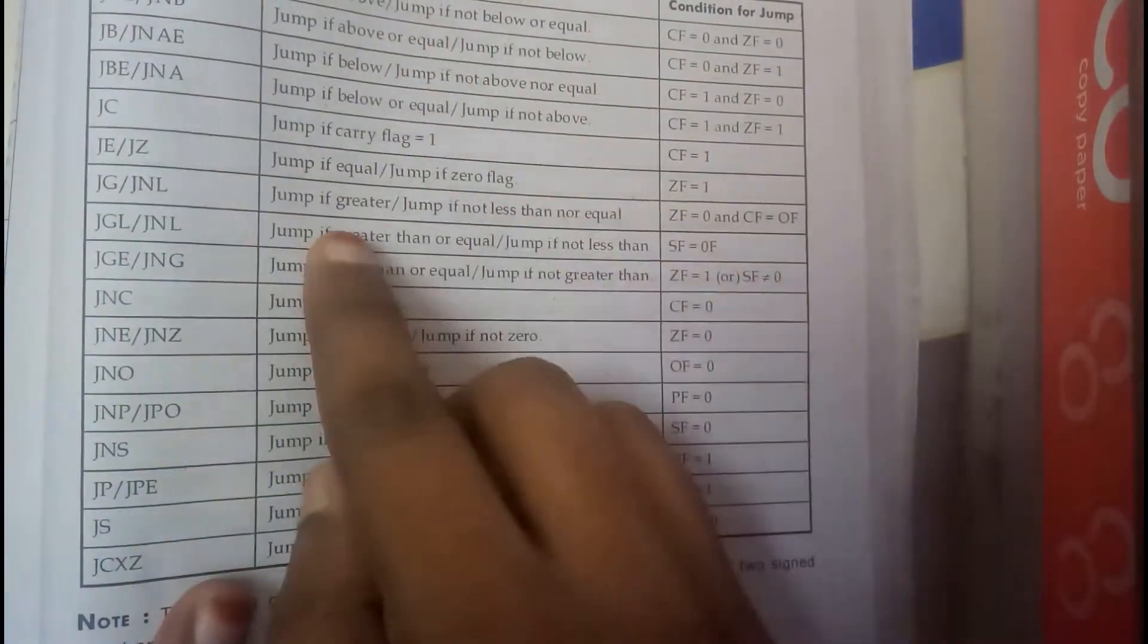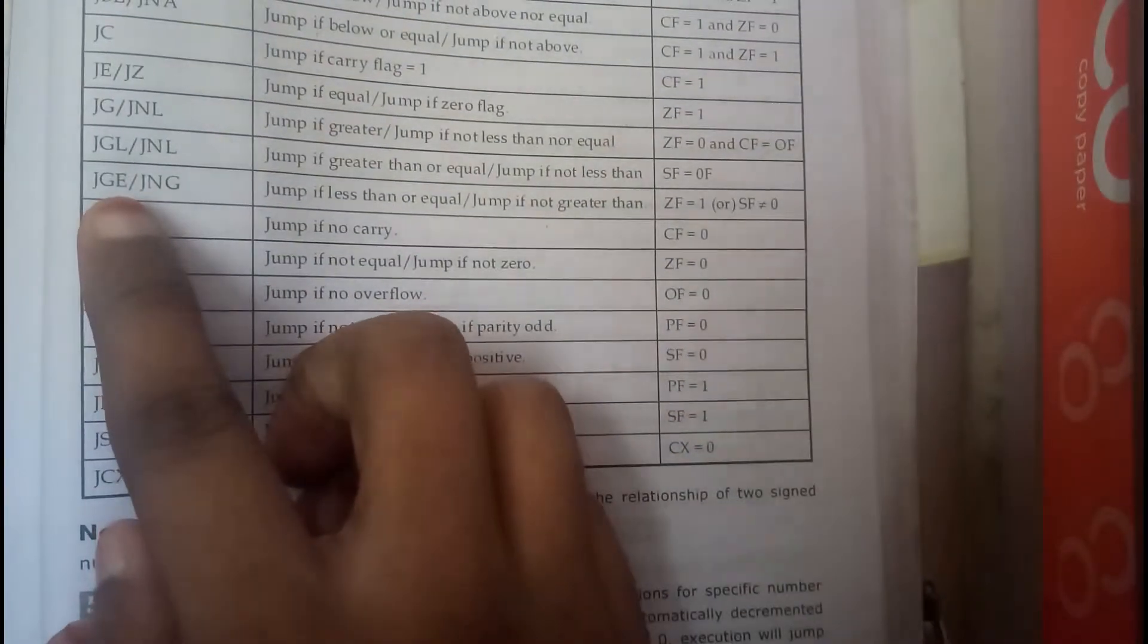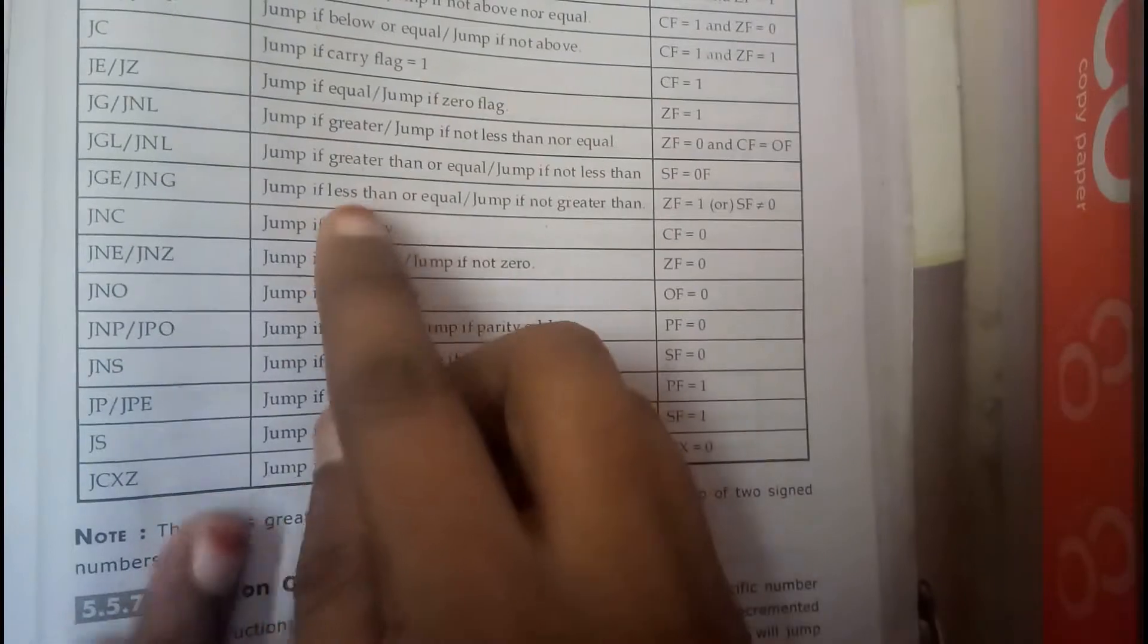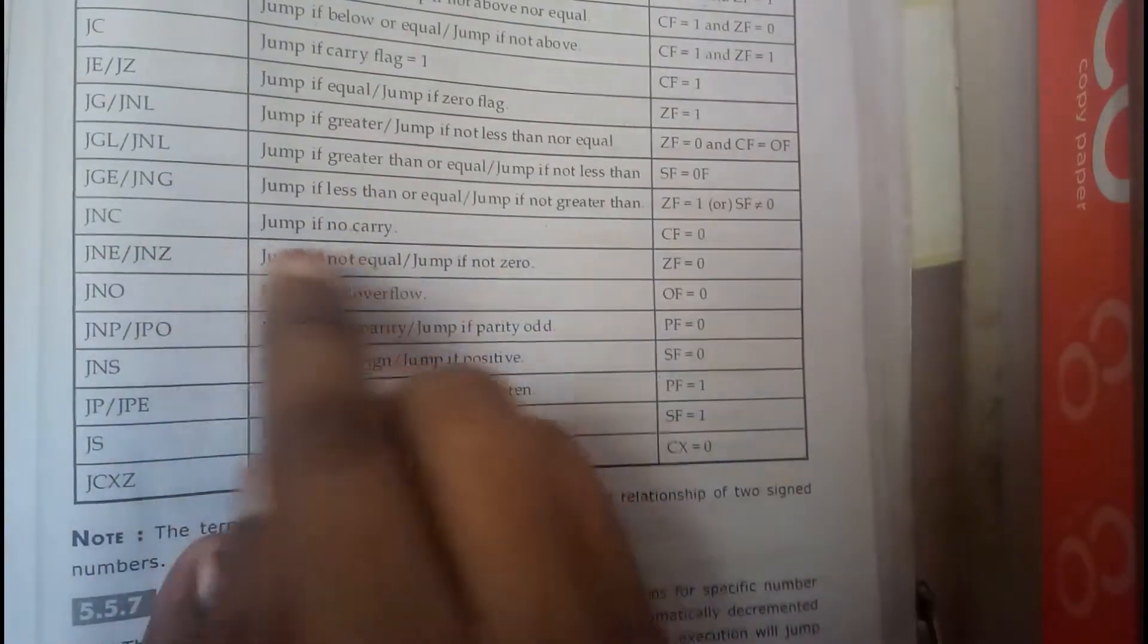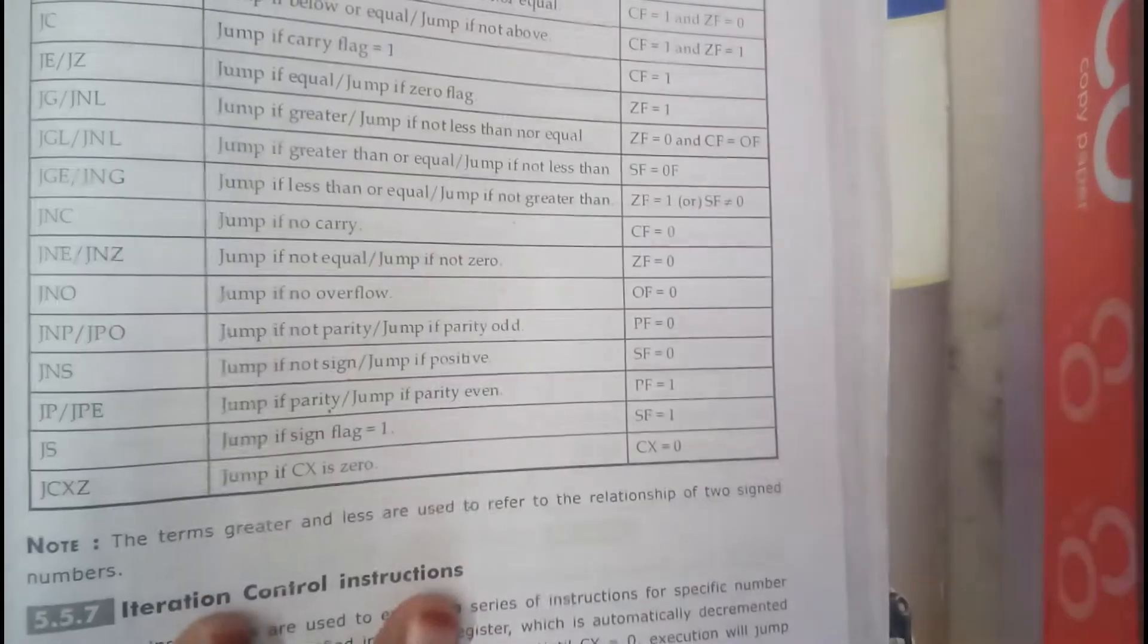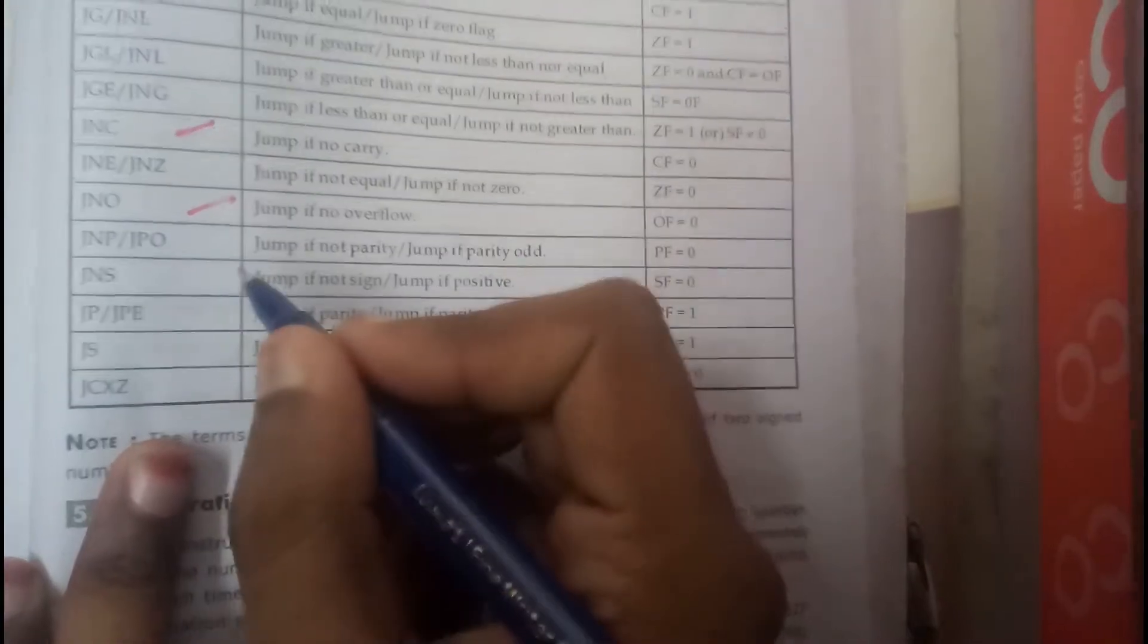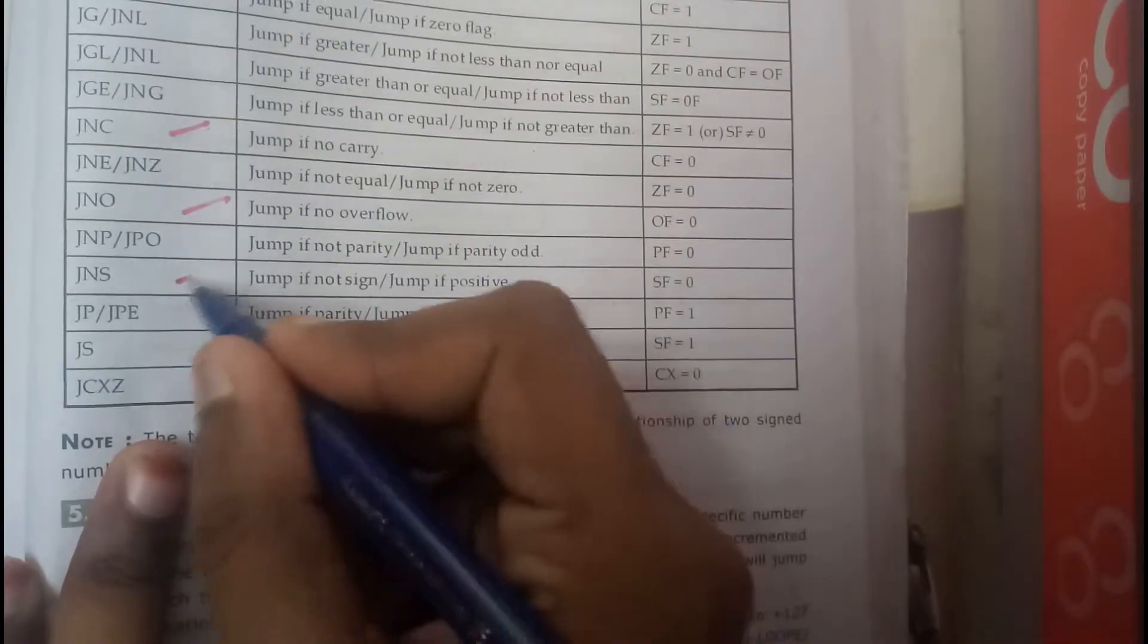if it is greater. JGL greater and equal, JGE which is less and equal, JNC which is not carry. So basically if you remember a few of these, that will be enough according to me. I remember only these things: JNC, JNO and JNS, JS.